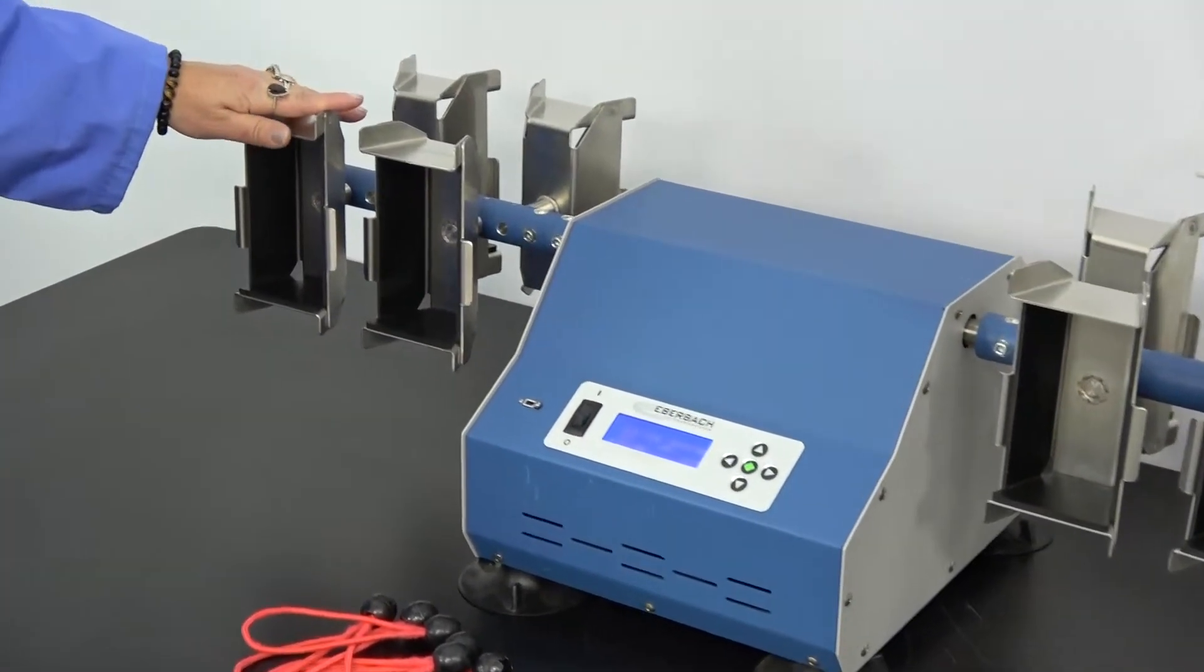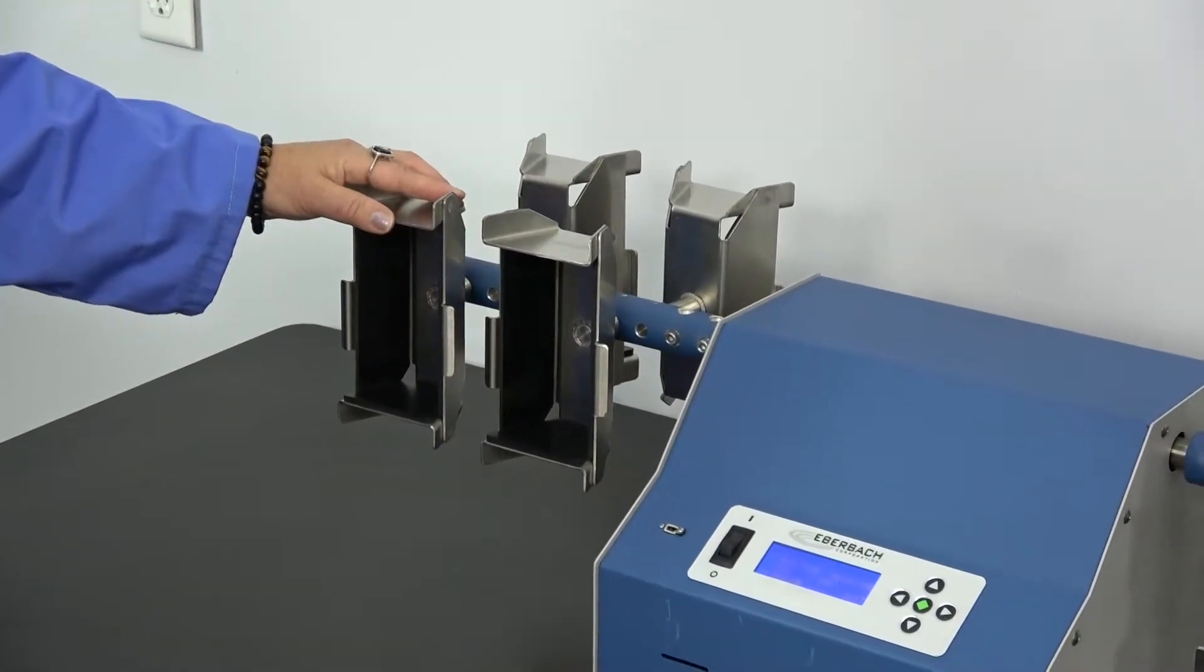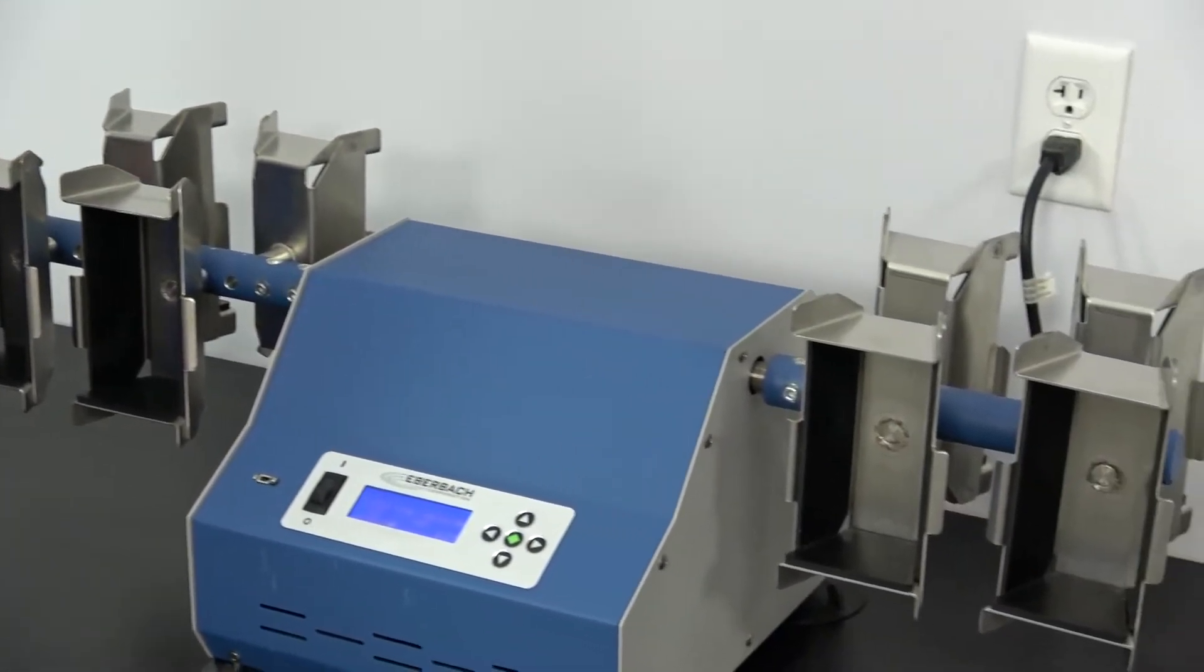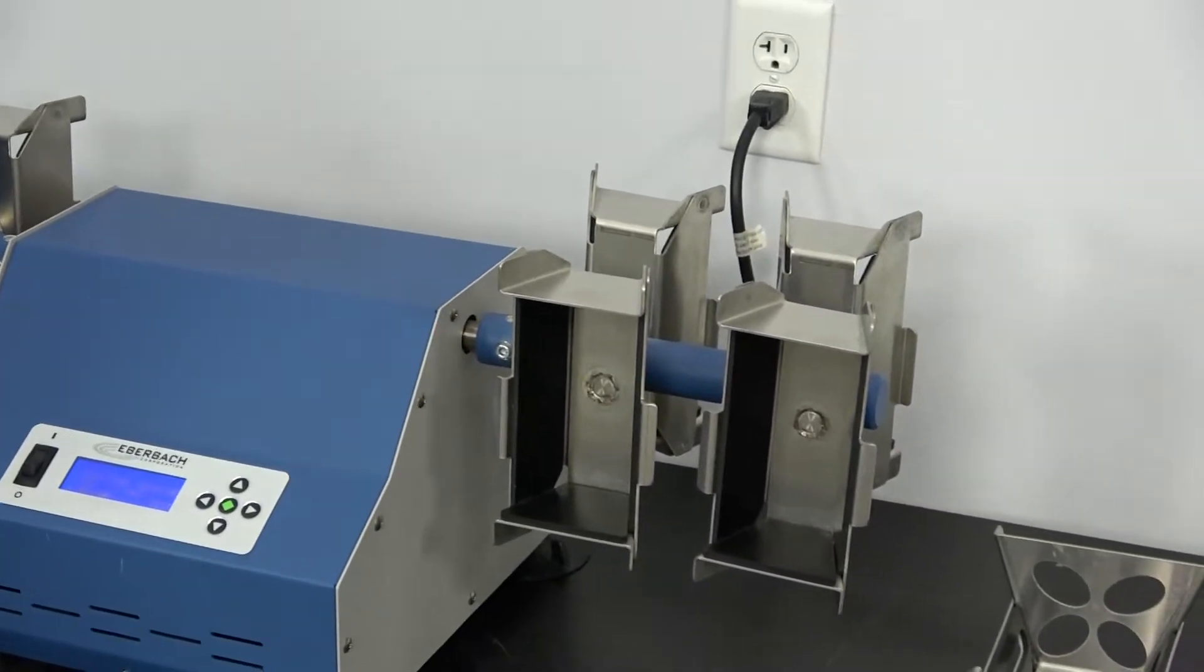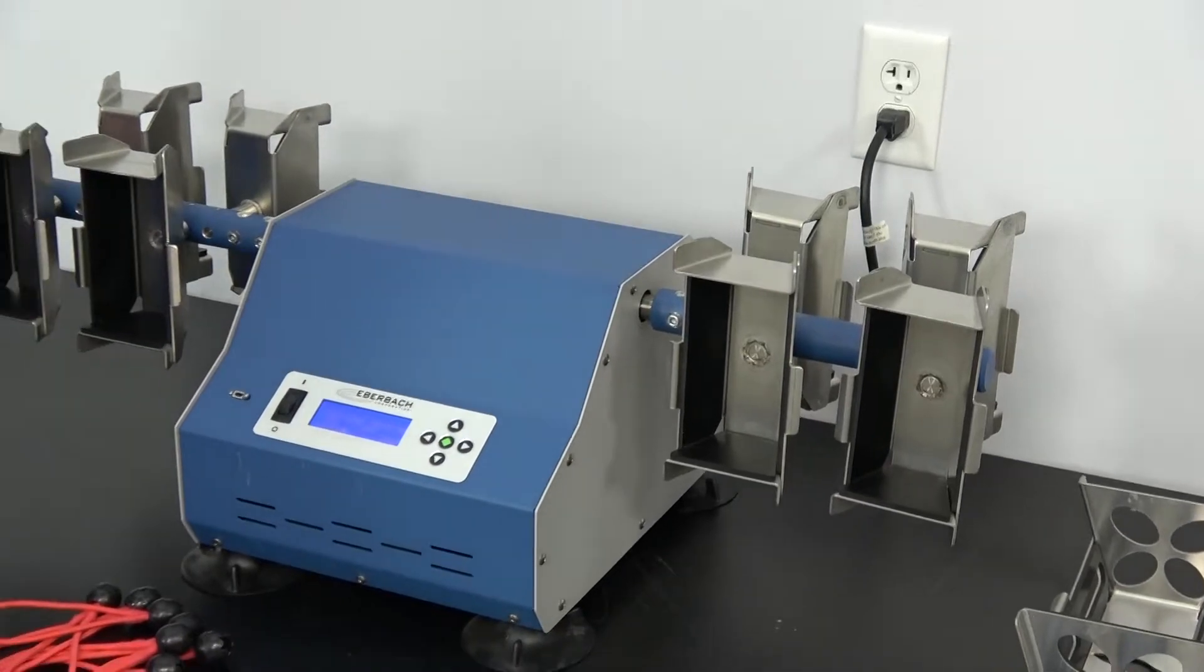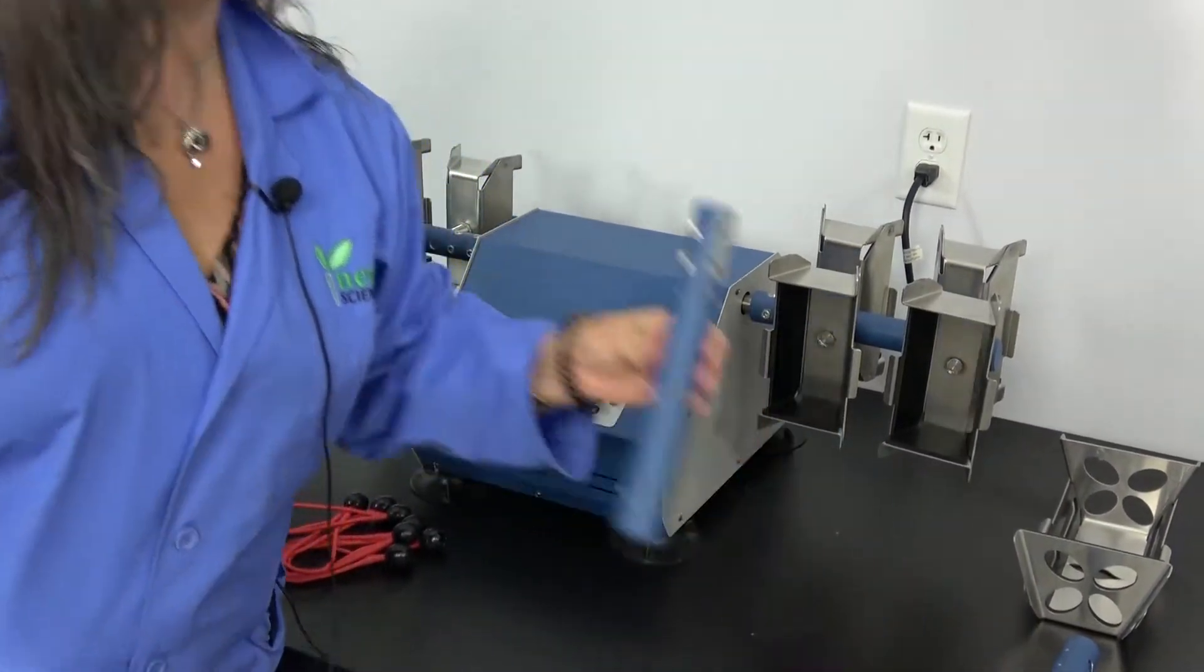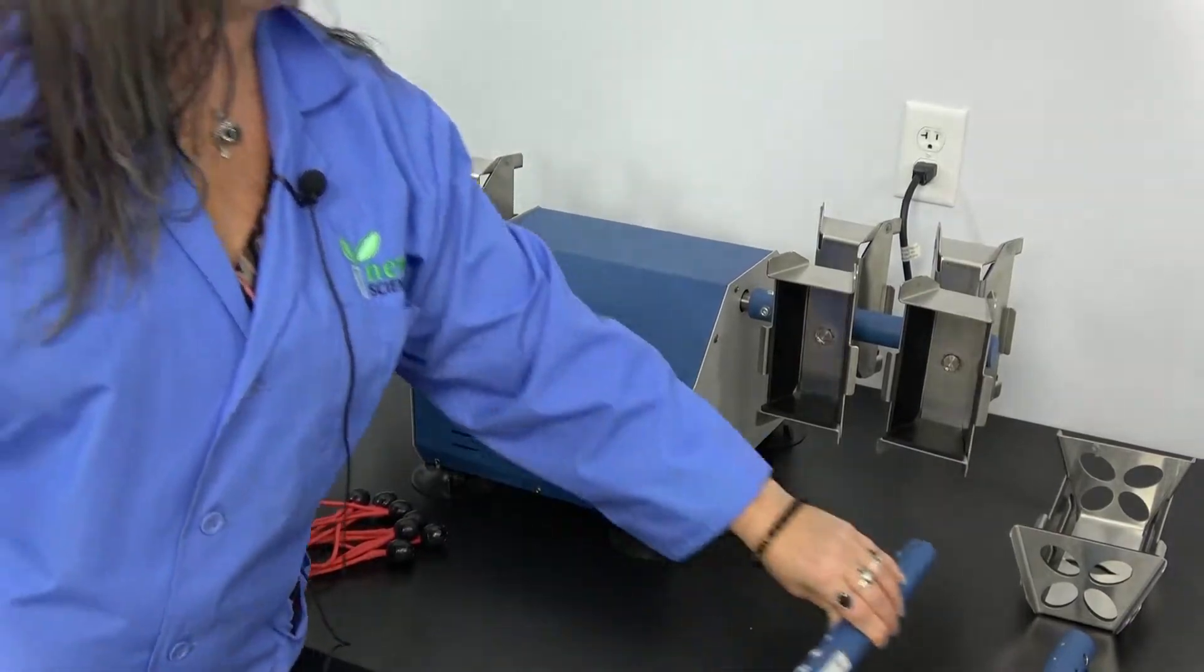This particular unit features eight clamps. The clamps allow for the attachment of various vessels, whether that be jars, flasks, tubes, whatever you have. These are detachable and can be switched out for some of the other attachments that come with it.